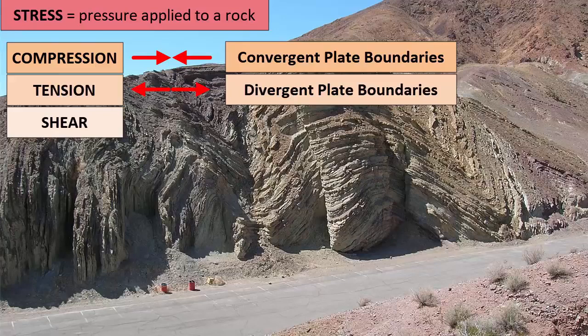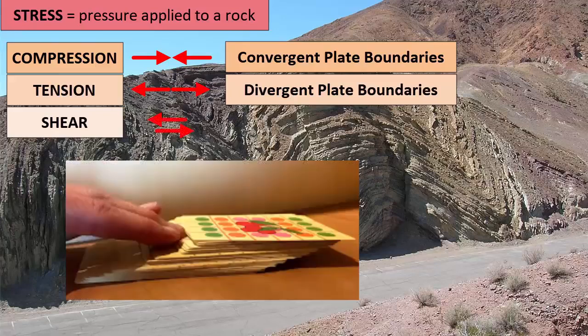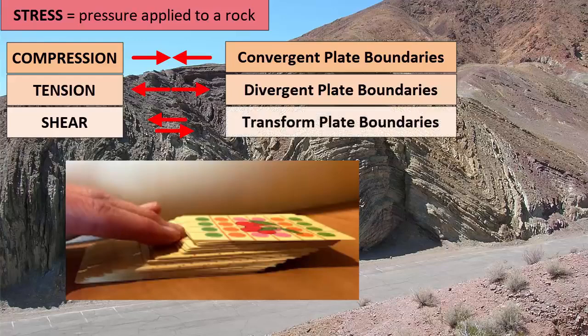When rocks are sheared, they experience what happens when you push on the top of a deck of cards while friction holds the bottom. One side moves in one direction while the other side remains fixed or moves in the opposite direction. Shear happens at transform plate boundaries, where plates slide past one another.